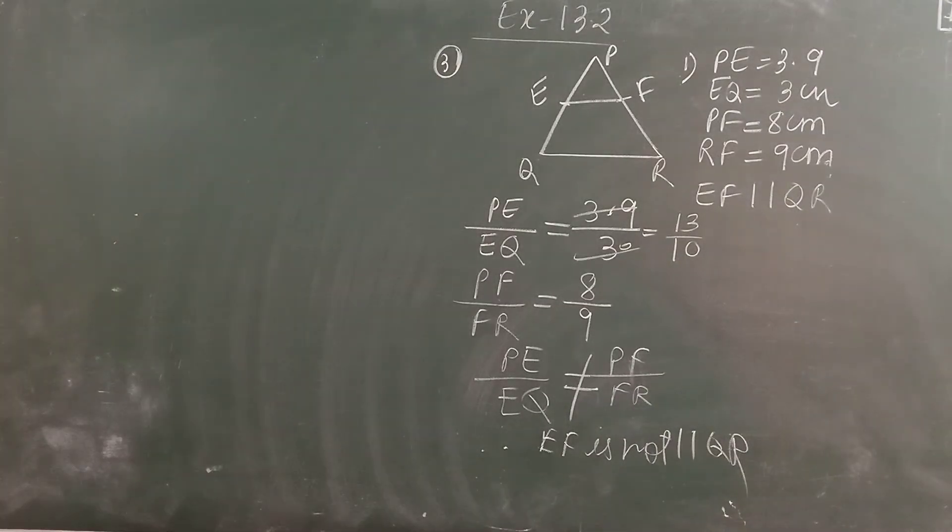In second condition, PQ is 1.28, PR is 2.56, PE is 0.18 and PF is 0.6. Can you get the ratio? If it is equal then you can say they are parallel. So I am going to explain the next question. Question number 5.